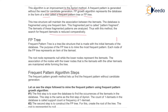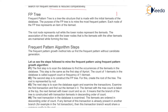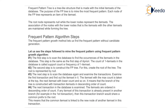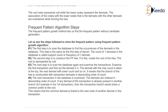Now we will see what is the FP tree. The FP tree is a Frequent Pattern Tree. It is a tree structure made with the initial item set of the database. The purpose of the FP tree is to mine the most frequent patterns. Each node of the FP tree represents an item of the item set. The root node represents null while the lower nodes represent the item sets. The associations of the nodes with the lower nodes are maintained while forming the tree.